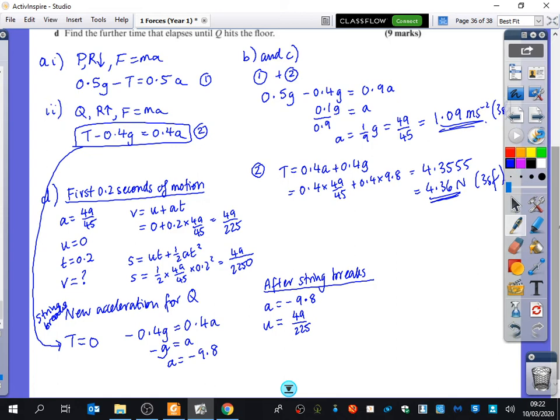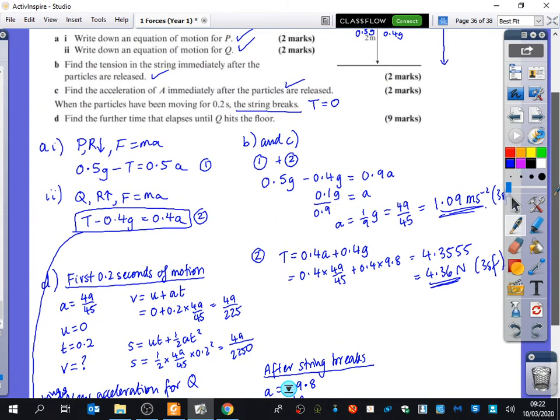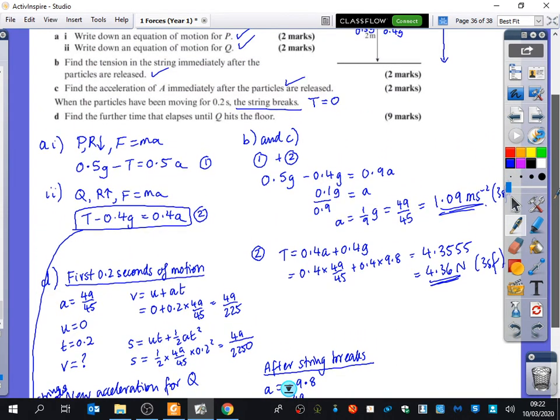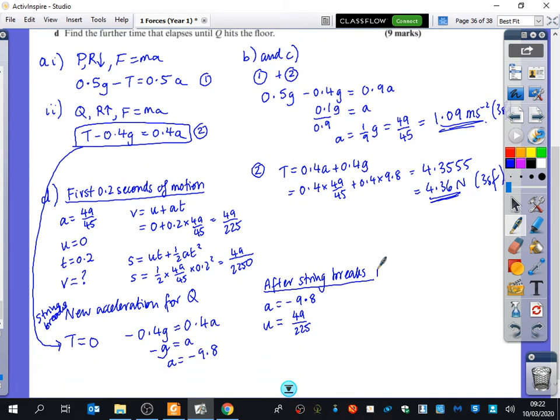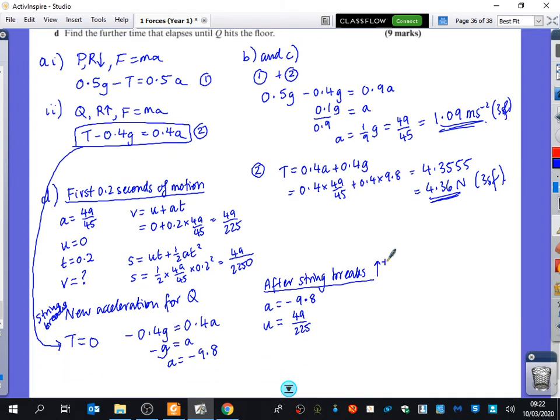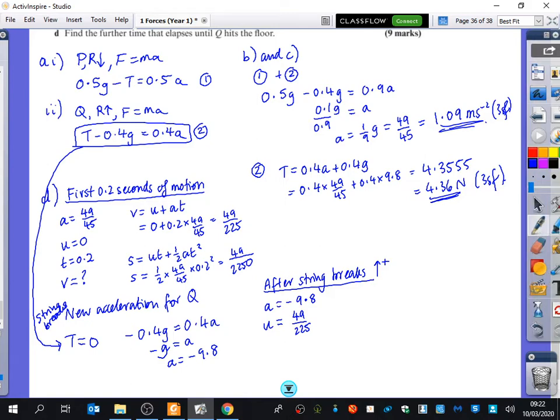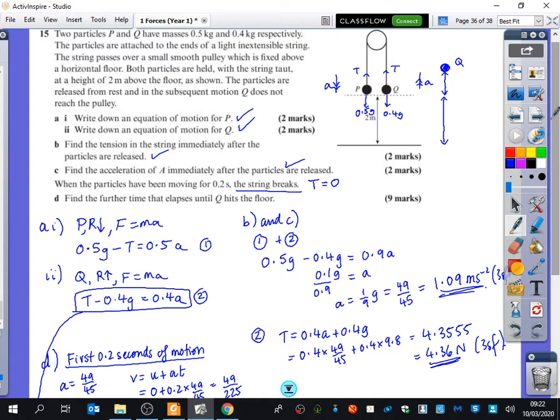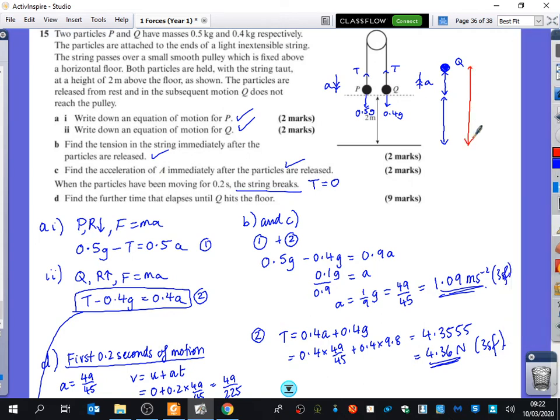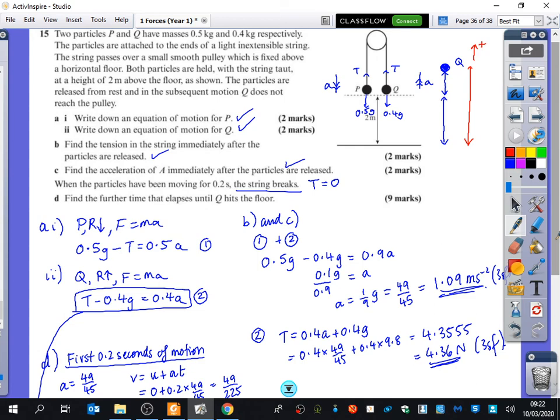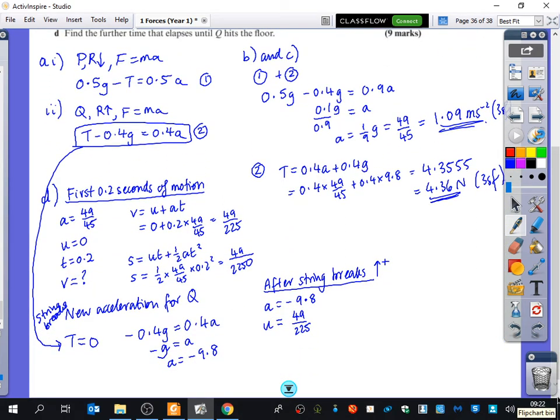And we're trying to find out, find the further time that elapses until Q hits the floor. It looks like we're taking this direction as positive. So let's go back to the diagram for a second. We're now trying to say, how long does it take for particle Q from here? How long is it going to take for it to hit the floor down here? And we have taken upwards as our positive direction. So what do you think is my last type of thing I need to say about for this? Can I say what S is, or what V is, or what T is? What can I write down for this bit here?